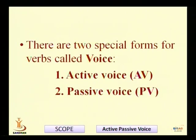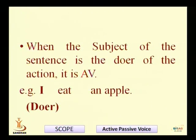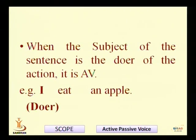In English language, there are mainly two types of voice: active voice (AV) and passive voice (PV). When the subject of the sentence is the doer of the action, then it is active voice. For example: 'I eat an apple.' In this sentence, 'I' is the doer — the action of eating is done by the subject 'I.' In our regular conversation, we use active voice most of the time. Active voice is more direct, clear, and precise as compared to passive voice.